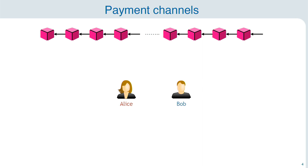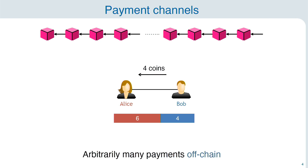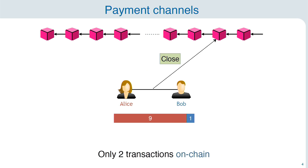Among these solutions, we have payment channels as a very prominent one. It's a two-party protocol that works like this. We have Alice and Bob that want to do some transactions between one another. What they can do is they can put a transaction on-chain opening the payment channel, and in this funding transaction they lock some coins. Then they just exchange some payments off-chain, redistributing these coins back and forth as often as they want. Finally, when they are done, they can put the latest of these transactions on the chain again and effectively close the payment channel. In the end, only two transactions went on-chain even though the two parties conducted multiple transactions between one another.